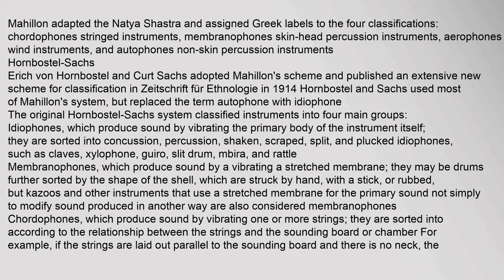Hornbostel and Sachs used most of Mahillon's system, but replaced the term autophone with idiophone. The original Hornbostel-Sachs system classified instruments into four main groups: idiophones, which produce sound by vibrating the primary body of the instrument itself, sorted into concussion, percussion, shaken, scraped, split, and plucked idiophones such as claves, xylophone, guiro, slit drum, mbira, and rattle; membranophones, which produce sound by vibrating a stretched membrane, including drums sorted by the shape of the shell, and kazoos; and cordophones, which produce sound by vibrating one or more strings, sorted according to the relationship between the strings and the sounding board or chamber.